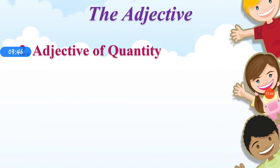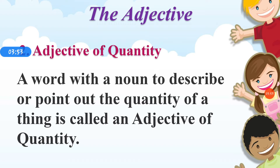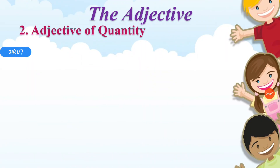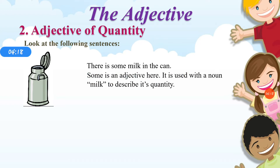What is adjective of quantity? A word used with a noun to describe or point out the quantity of a thing is called an adjective of quantity. For example, there is some milk in the can. 'Some' is an adjective here. It is used with the noun 'milk' to describe its quantity. Therefore, 'some' is the adjective of quantity.